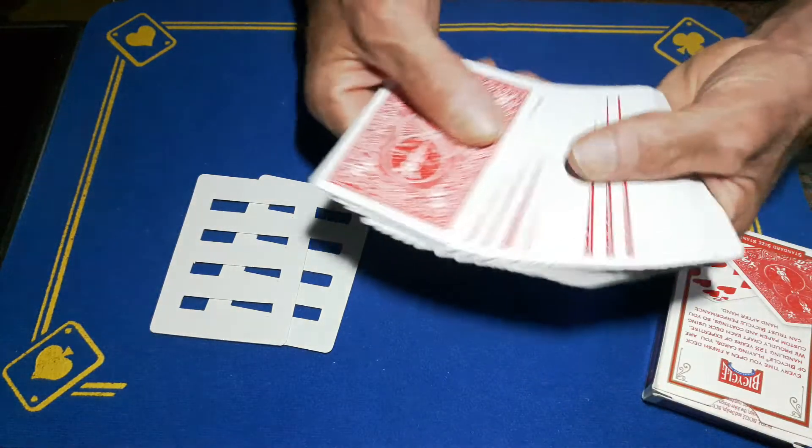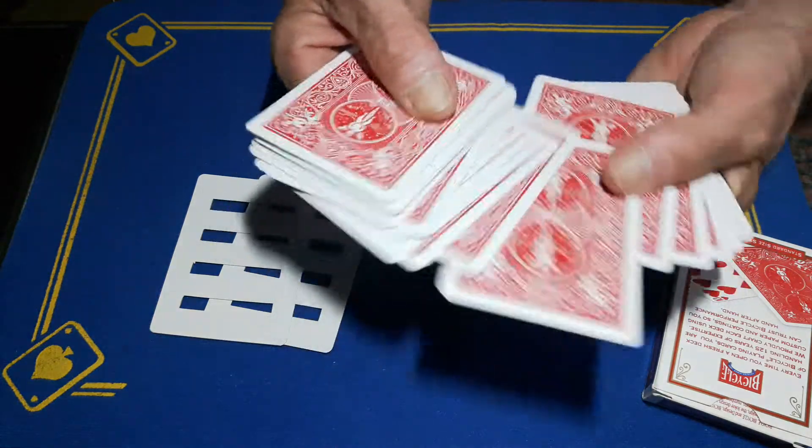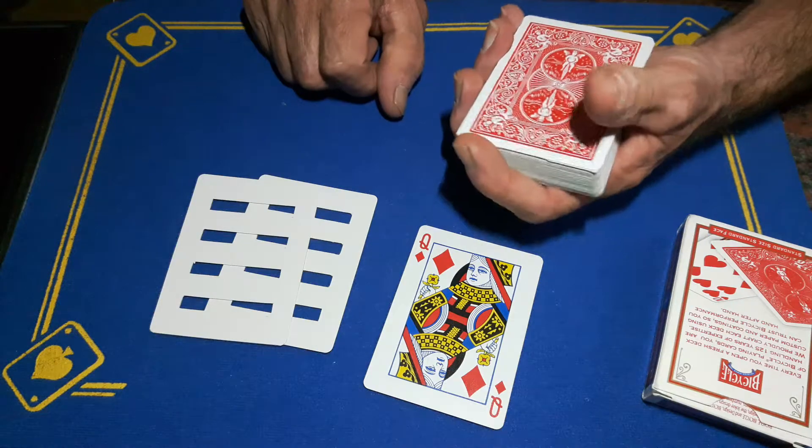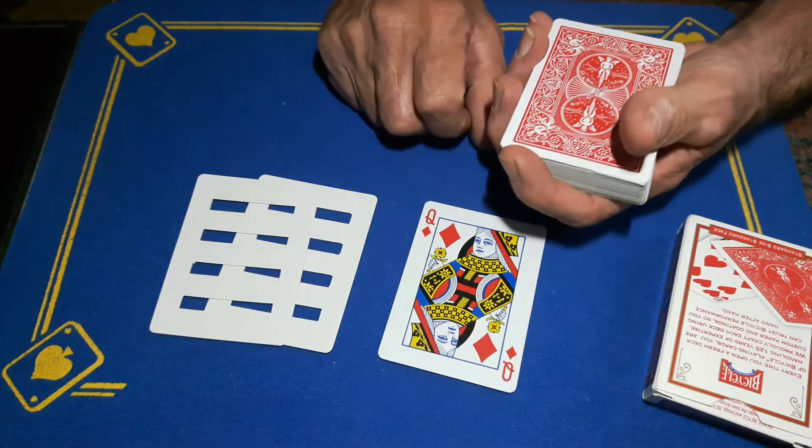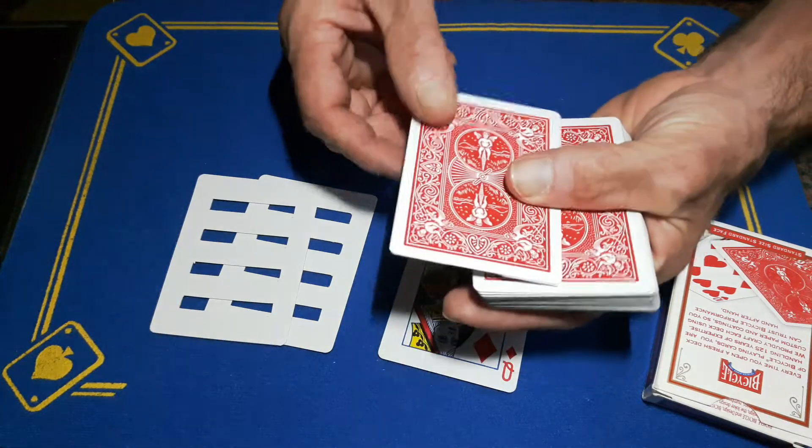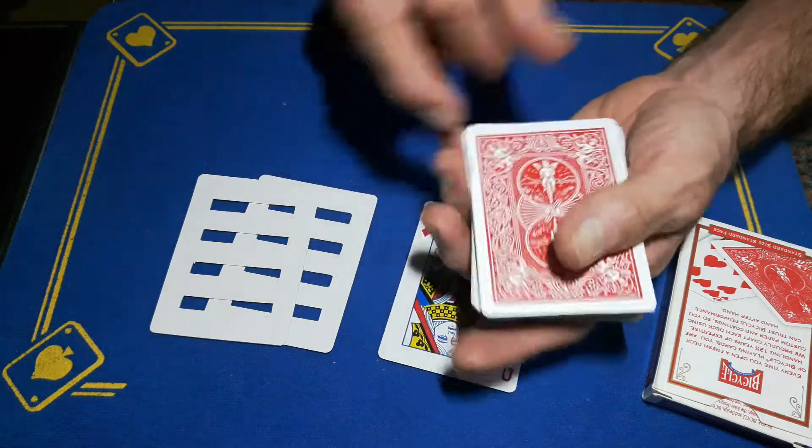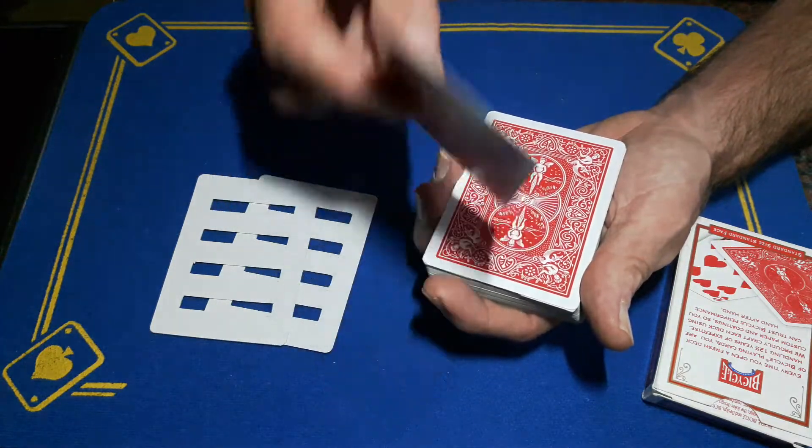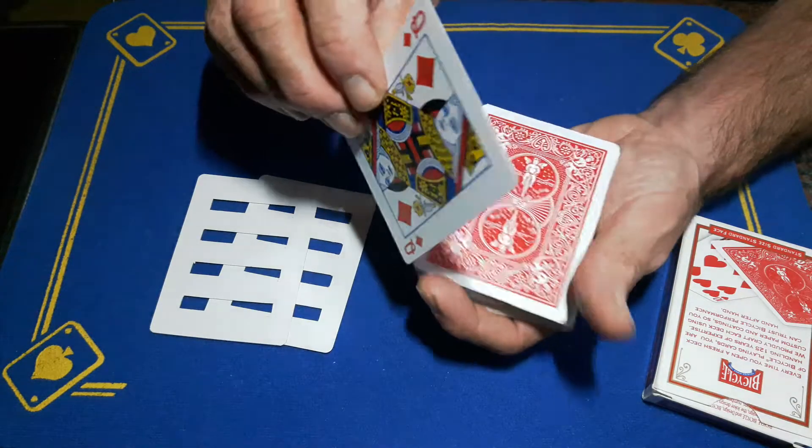Back side up, and spectator's got free choice of any card. You'll want them to sign this card because when they see this card again they need to know it is the same card. But because you've got your bottom of the box gaff on the top, you need to keep this on the top.